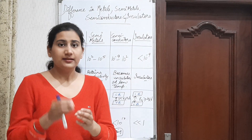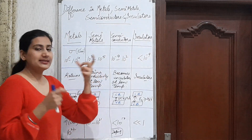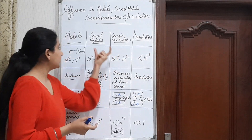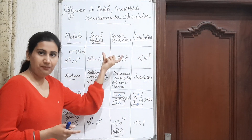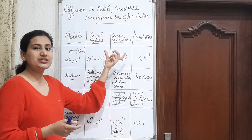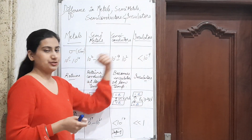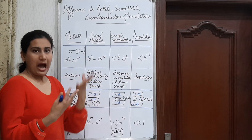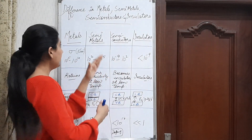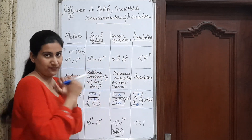But this definition is incomplete, because this definition is also applicable to semi-metals. Semi-metals are also the materials which have conductivity between metals and insulators. So how can we differentiate between semi-metals and semiconductors specifically?